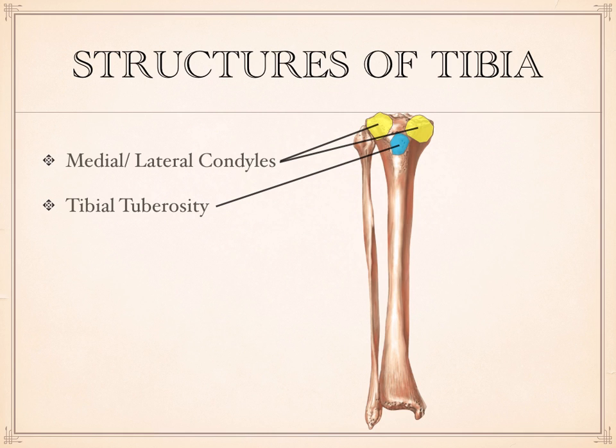The tibial tuberosity is a roughened feature where the quadriceps muscles attach. The roughness lets you know something strong is attached there — the bone is extra tough and strong at this position. This also happens to be the point of the tibia you kneel down on; if you kneel on the floor, the part of your skeleton touching at your knee is this tibial tuberosity, not the patella as you might think.